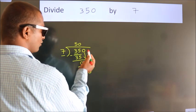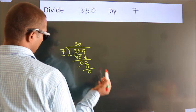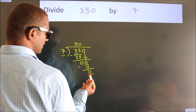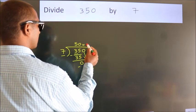After this, no more numbers to bring down. And we got remainder 0. So this is our quotient.